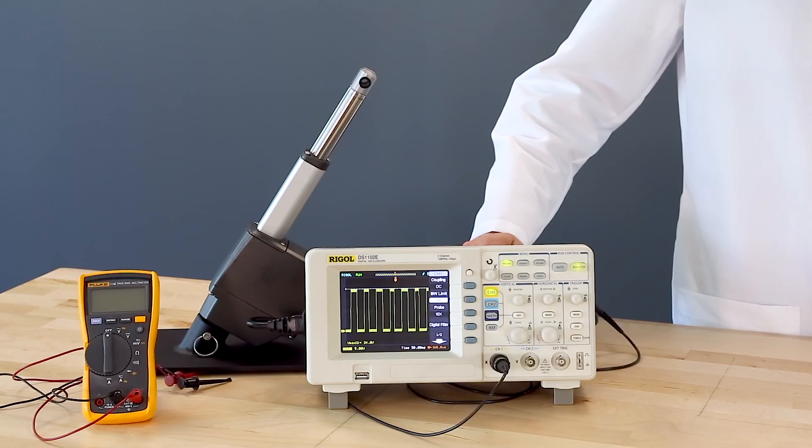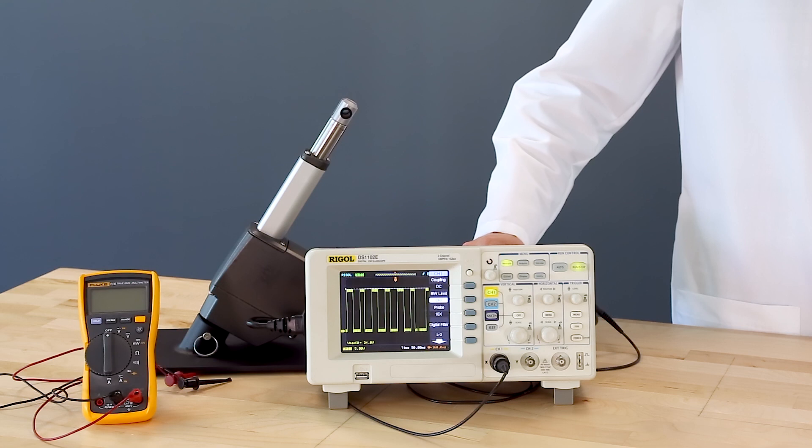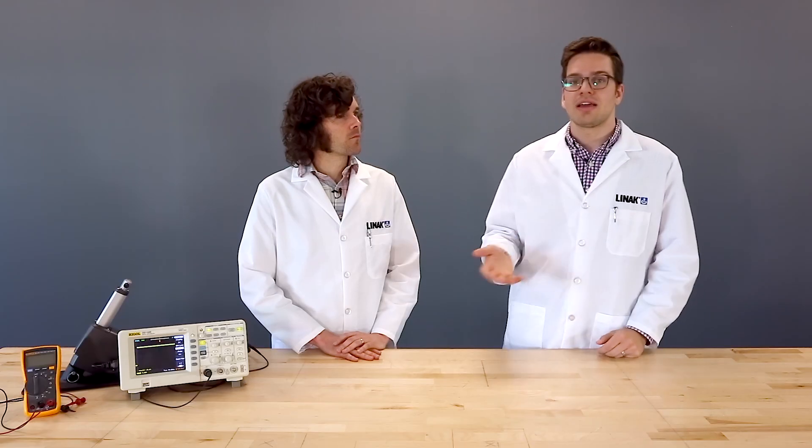So in a Hall effect sensor, the DC motor rotates the actuator spindle. As that spindle rotates, it rotates a set of magnets that the Hall effect sensor picks up the magnetic field change in. As it picks that up, the controller counts that, and that determines your position along the stroke.